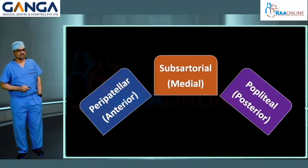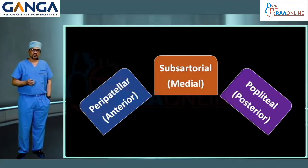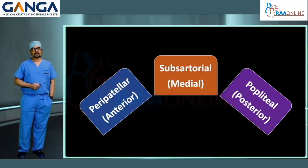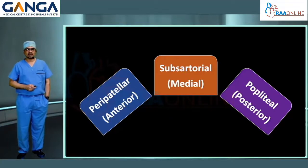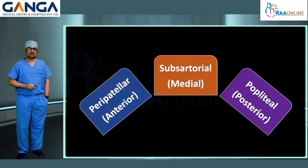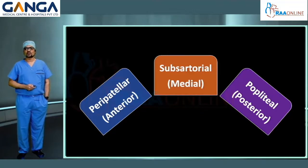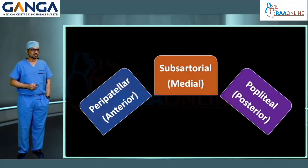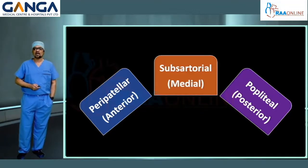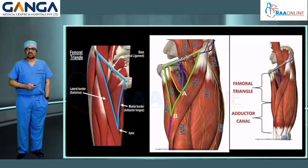All these nerves, before supplying the knee joint, form three different plexuses. The peripatellar plexus lies anteriorly over the knee joint and supplies skin around the patella and anterior capsule. The subsartorial plexus lies over the middle aspect of the thigh and supplies the anterior and middle knee as well as the anterior capsule. The posterior or popliteal plexus lies over the posterior aspect and supplies all intraarticular structures and the posterior capsule.